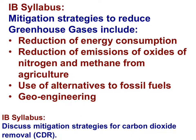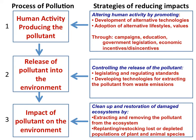Here is a list of mitigation strategies to reduce greenhouse gases: a reduction of energy consumption, reduction of emissions of oxides of nitrogen and methane from agriculture, use of alternatives to fossil fuels, and geoengineering. I will provide visual imagery of each of these strategies, including strategies for carbon dioxide removal from the atmosphere. Remember to apply the framework for pollution management as you approach the mitigation of climate change.